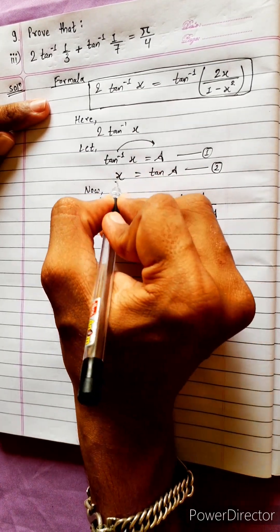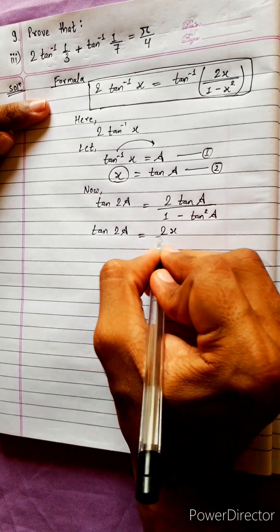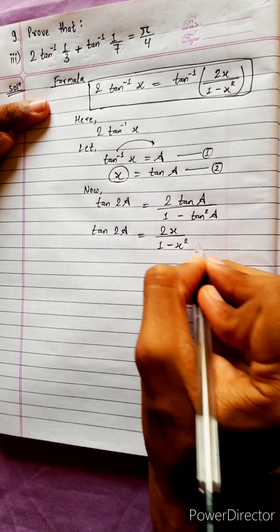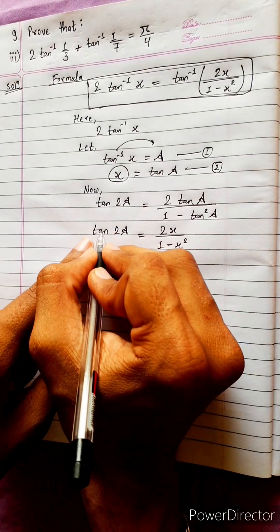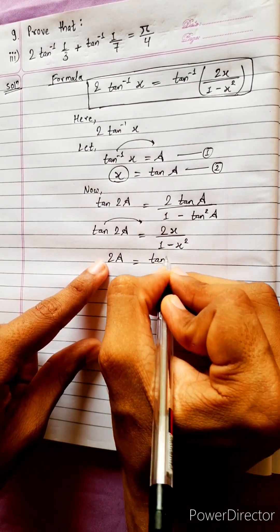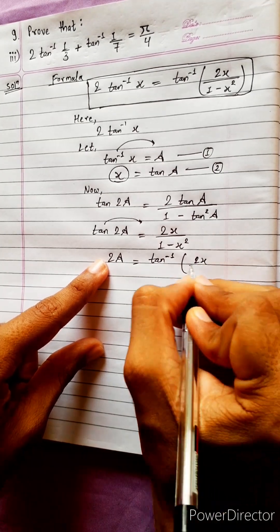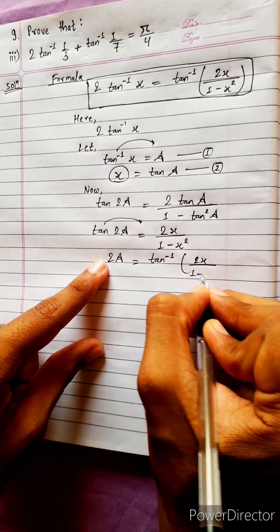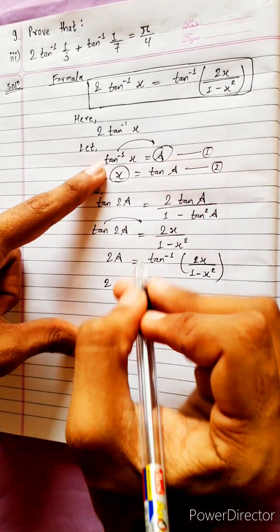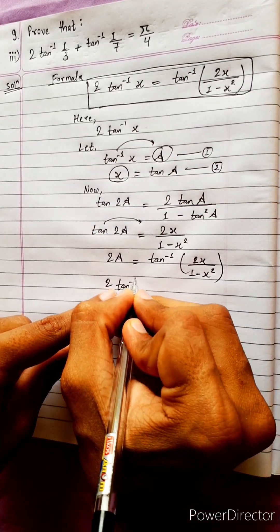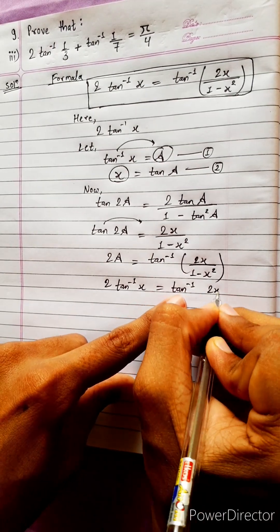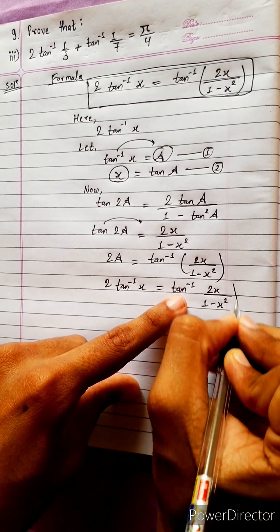Substituting x for tan(a): 2a equals tan⁻¹(2x upon 1 minus x squared). Now a equals tan⁻¹(x), therefore 2·tan⁻¹(x) equals tan⁻¹(2x upon 1 minus x squared).